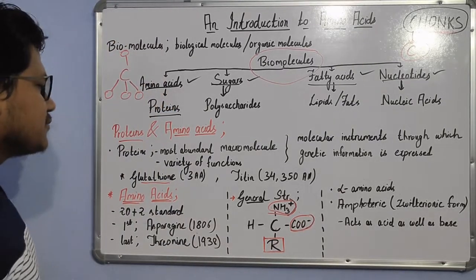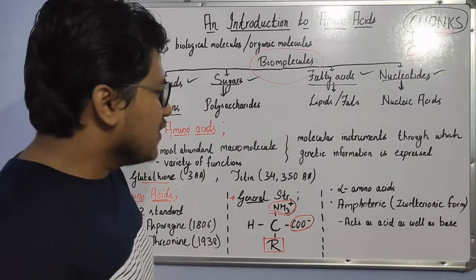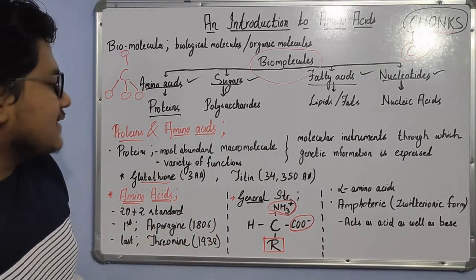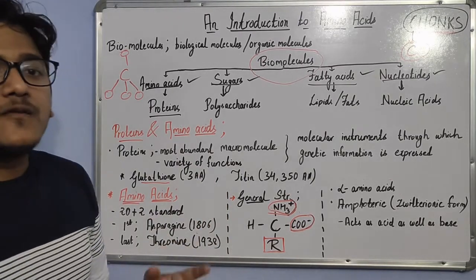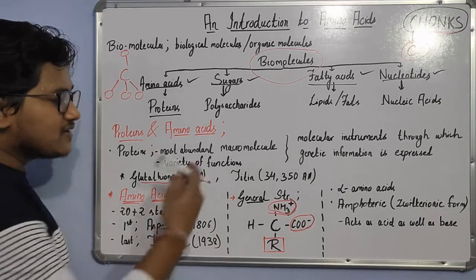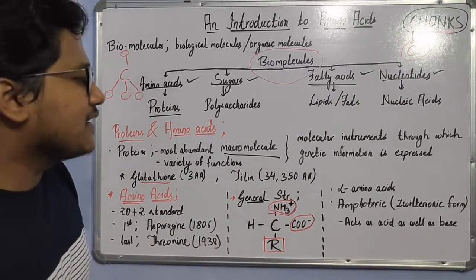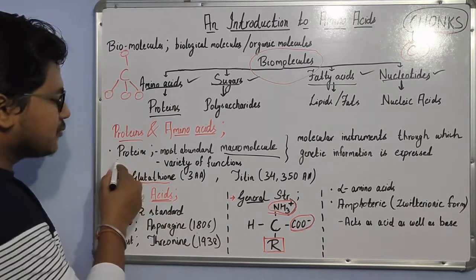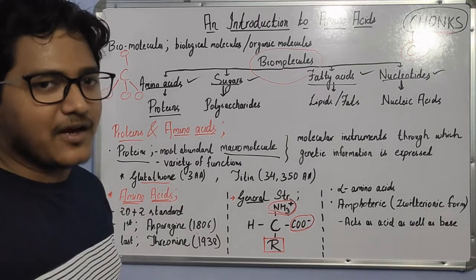Now let's move on to the basics of proteins and amino acids. Proteins are involved in a variety of biological processes and are the most abundant macromolecules after water. Since water is not a biomolecule, this makes protein the most abundant biomolecule or biological macromolecule.